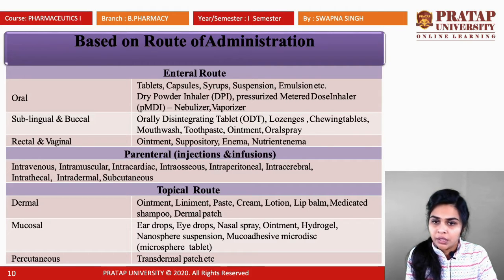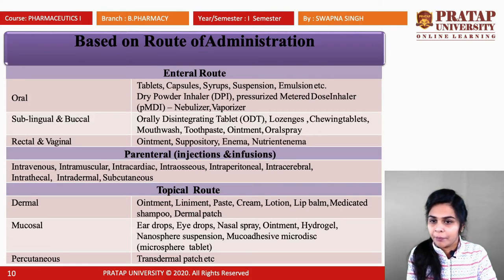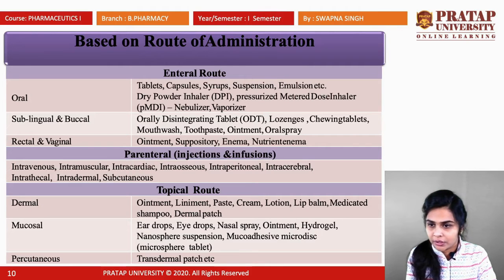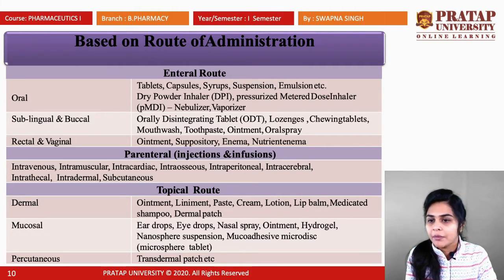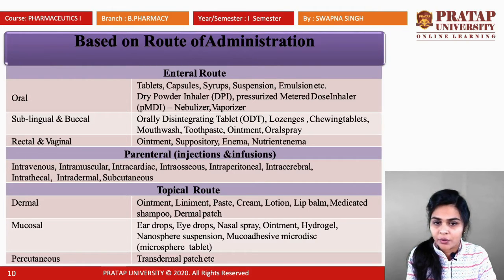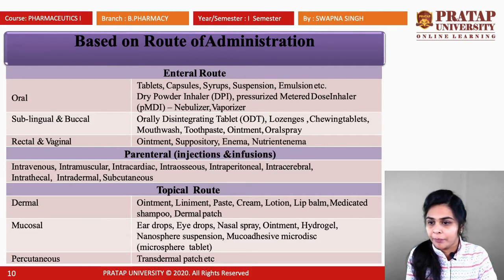For the rectal and vaginal route, there are ointments, suppositories, enemas, and pessaries. For the parenteral route, injections or infusions are used — including intravenous (IV), intramuscular (IM), intracardiac (IC), intraosseous, intraperitoneal, intracerebral, intrathecal, intradermal, and subcutaneous injections.